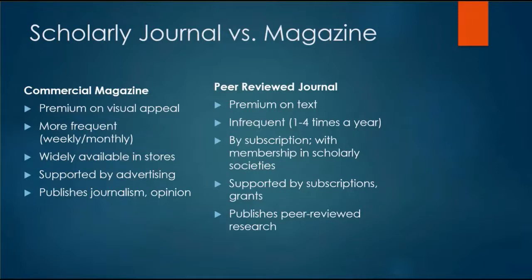There may be few or no illustrations or images in a peer-reviewed journal. A commercial magazine may come out once a week or once a month, but a peer-reviewed journal will come out maybe one to four times a year.